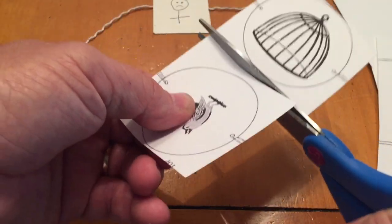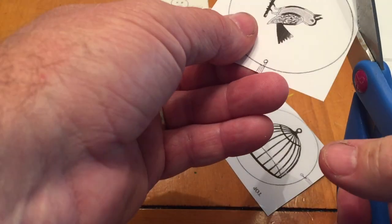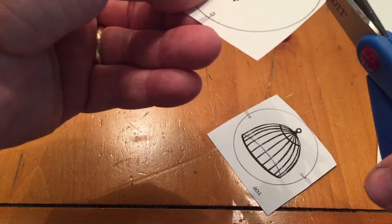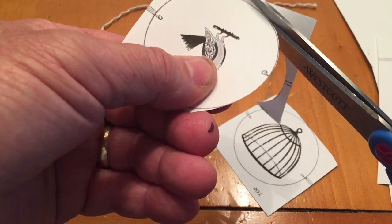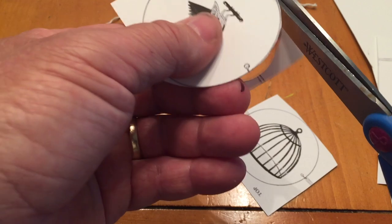So just get a couple circles cut out here, one with the bird and one with the cage. And I'll speed this up because you probably don't need to watch me see how well my cutting skills are.